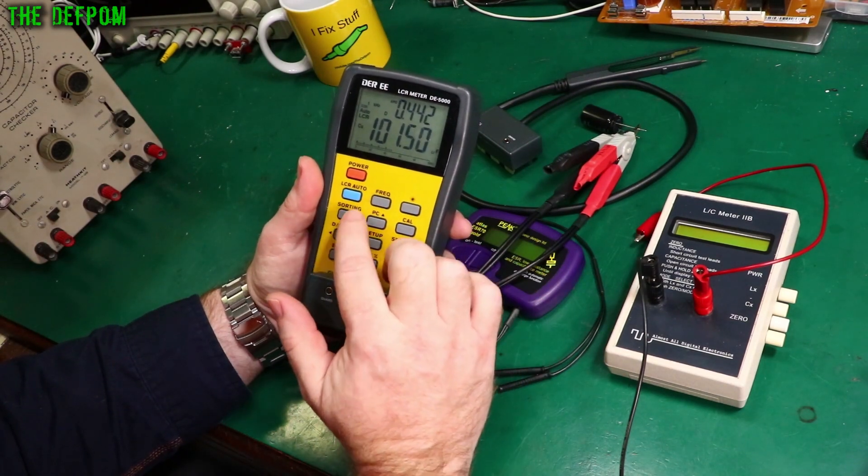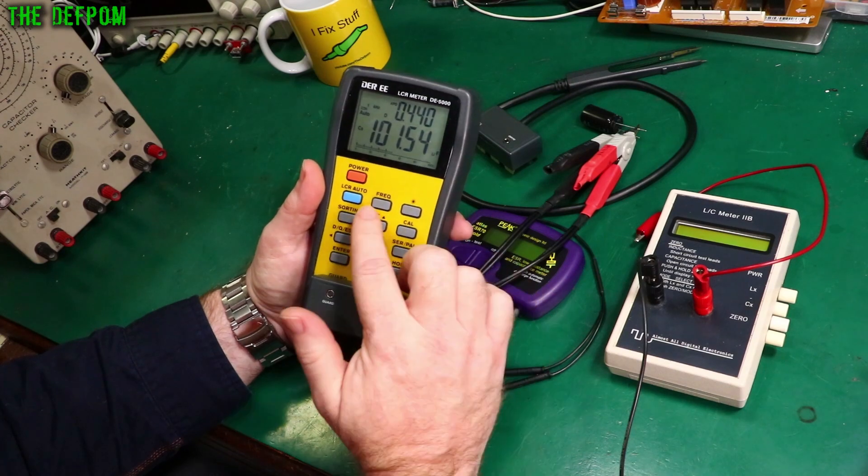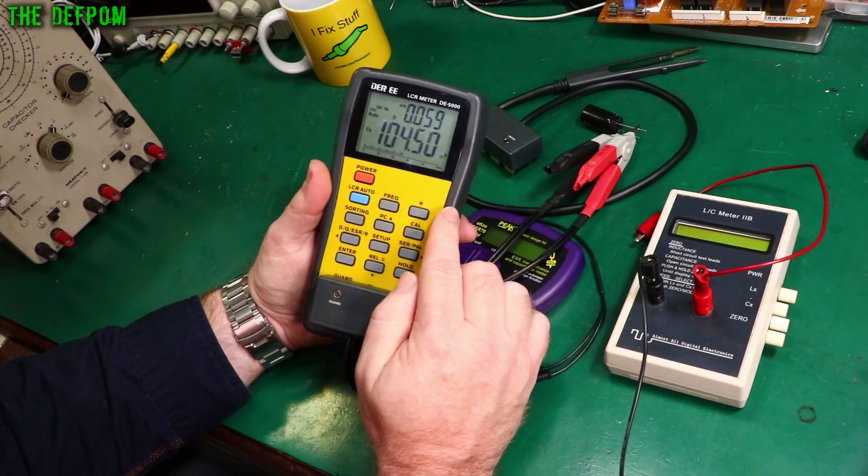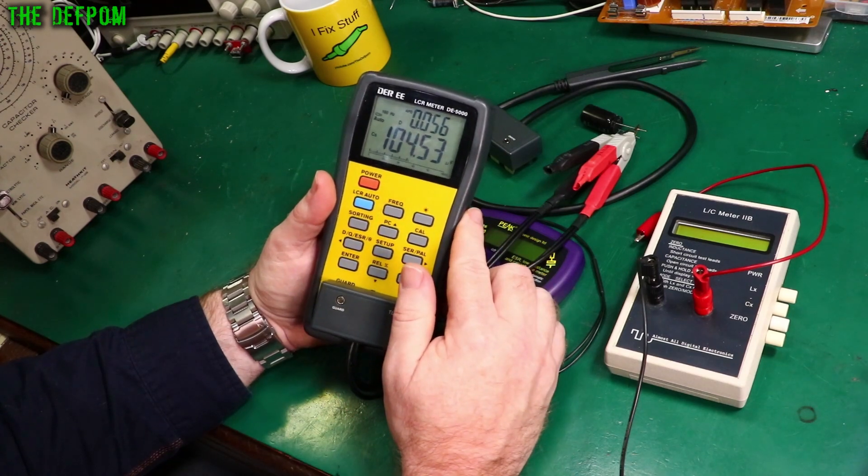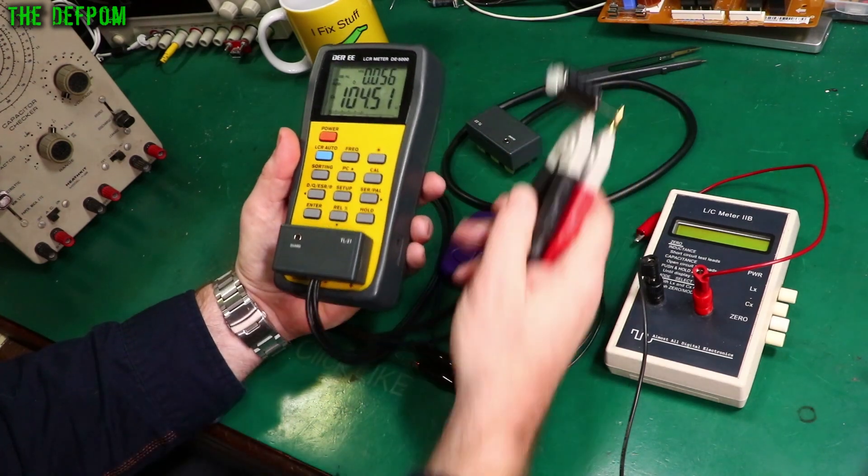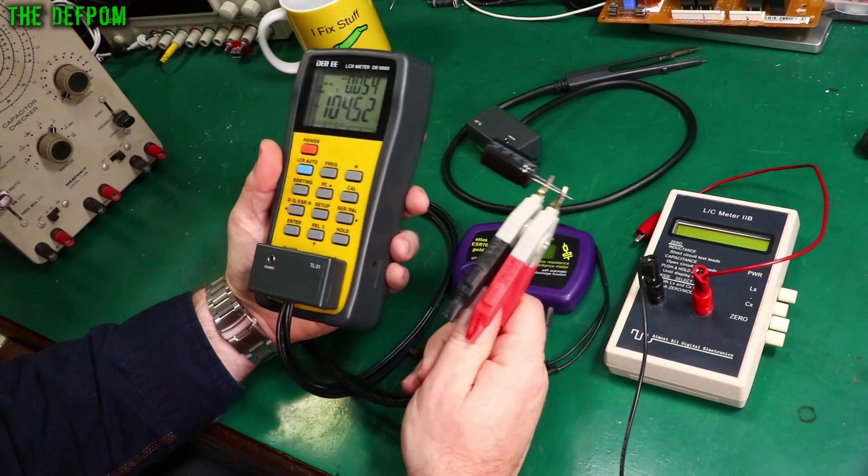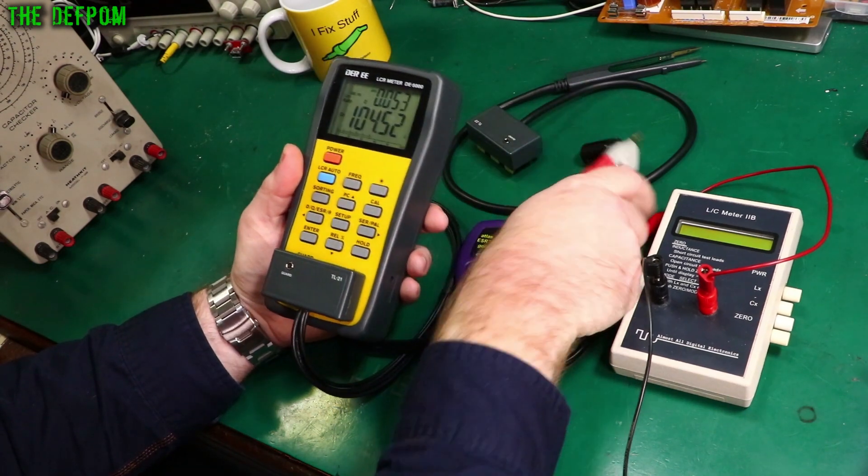And this is a 120 microfarad capacitor at 21 kilohertz. So if I go into manual mode for capacitance series capacitance and change frequency down to 100 hertz, it's a bit closer, 104 microfarad now. A bit closer. This sort of capacitor you're measuring at basically 100 hertz or 120 hertz. Different kinds of capacitors maybe you need different frequencies depending on what you're actually doing, what they're designed for.